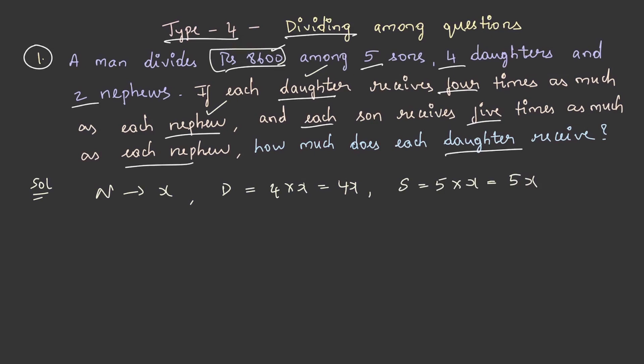Now the amount 8600 is divided among 5 sons, 4 daughters and 2 nephews. So 5 into 5x, this is part of each son and there are totally 5 sons, plus 4 into 4x, 4 daughters and part of each daughter, plus 2 into x, there are 2 nephews and part of the nephew.